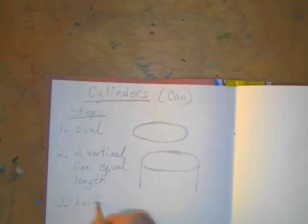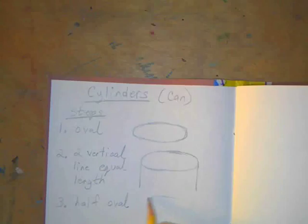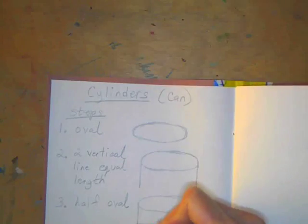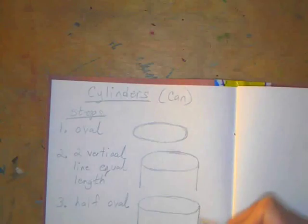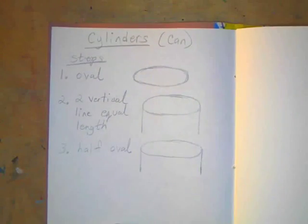Step three is to draw a half of an oval, a half oval. So I go back to my oval first.